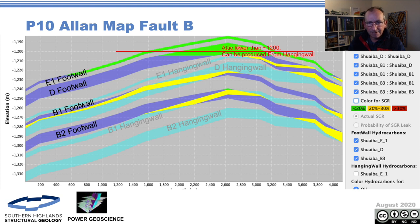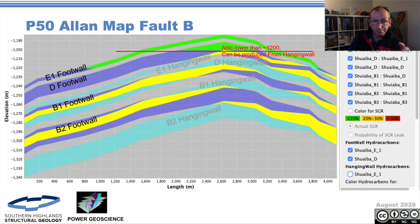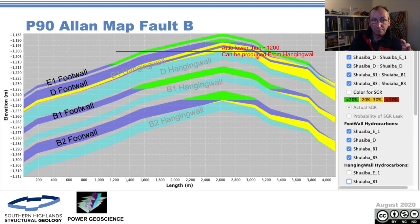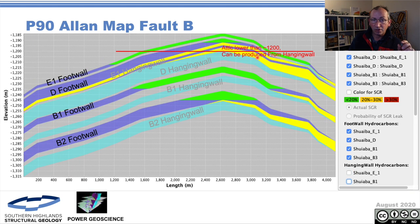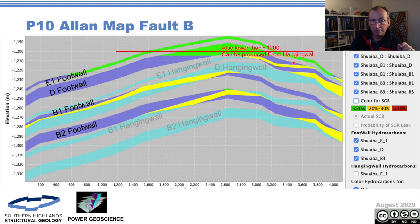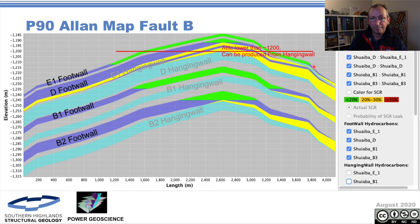You can see that for the D, we've got a more modest amount of hydrocarbon that we might be able to produce. But still, we're going to be missing out quite a bit. So what we'll have to do is have a look at the uncertainty on these. So that's a P10 Allen map, P50 Allen map, P90. You can see all of those realizations, the E1, even though it has a significant column there that wouldn't be produced because of this leak point in here. That leak point just in here is the one that's controlling it.